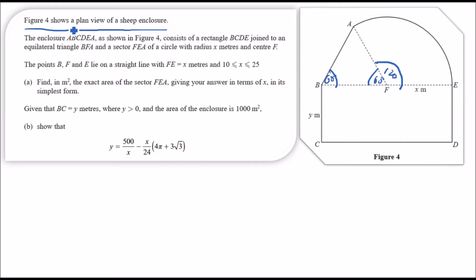The sector has an angle of 120 degrees, radius x meters, and center F. So this length is x, meaning the whole base length is 2x. The points B, F and E lie on a straight line with FE equals x. Part (a): find the exact area of sector FEA.